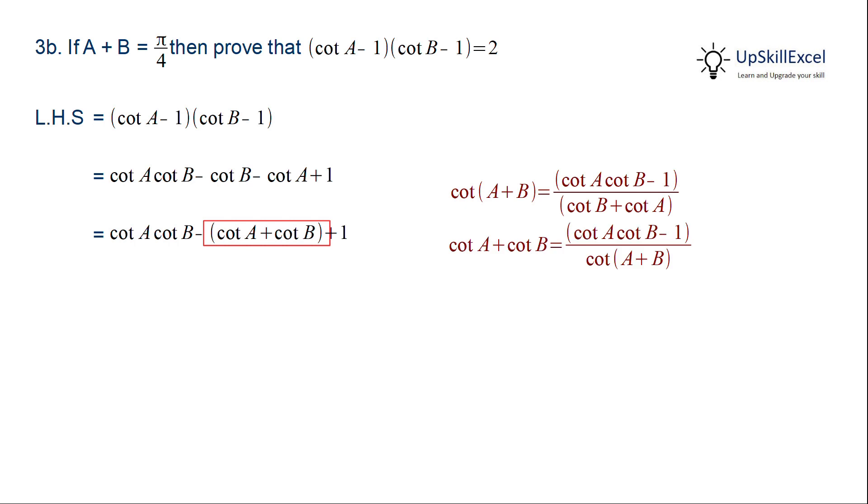So we can substitute cot A + cot B by (cot A cot B - 1) divided by cot(A + B). Now we are given that A + B is equal to π by 4, so cot(A + B) is equal to 1.